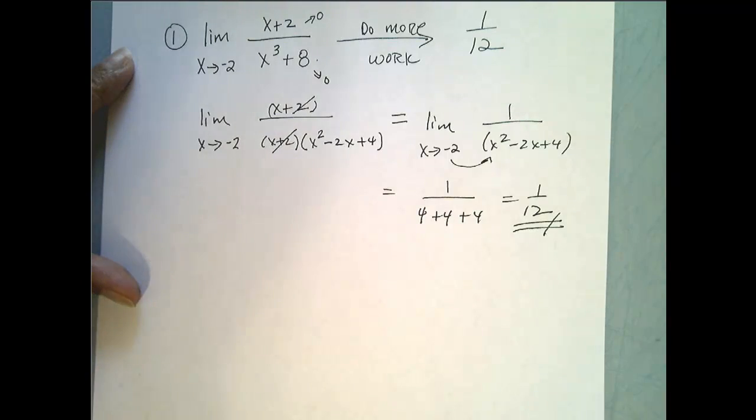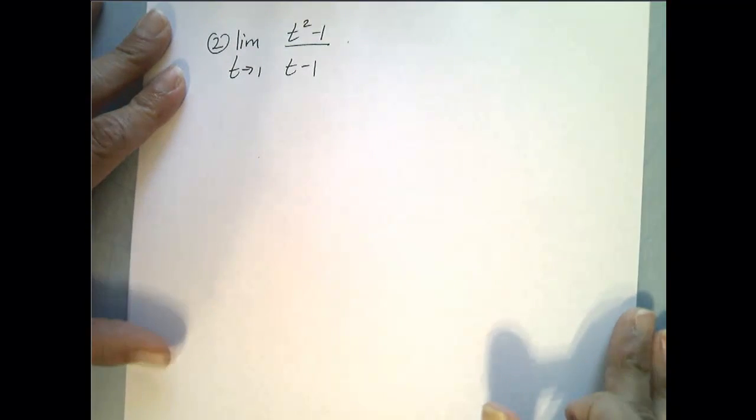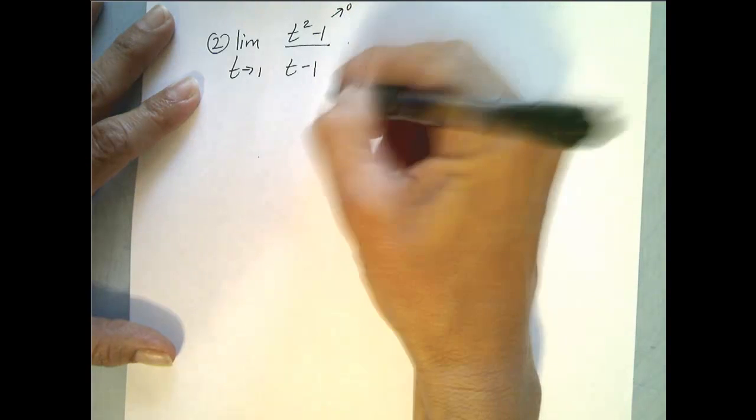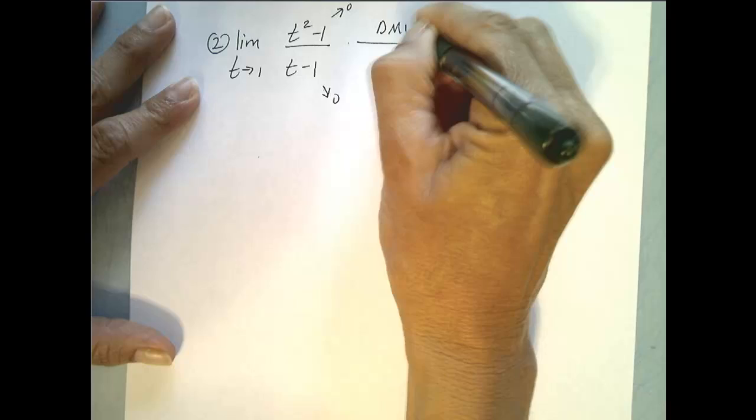Okay, let's look at our second example. So in this one, we are going to look at the limit of this quotient as t goes to 1. Again, we try direct substitution and we see the top goes to 0, the bottom goes to 0, so this tells us to do more work.